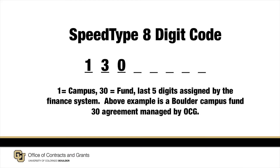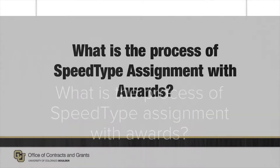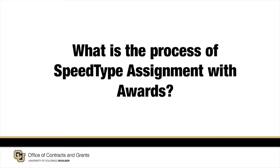First things first — if you're new to the university, perhaps you need a definition of what a speed type is. A speed type is a number assigned by the finance system. It is the account where expenditures on sponsored projects will be posted.